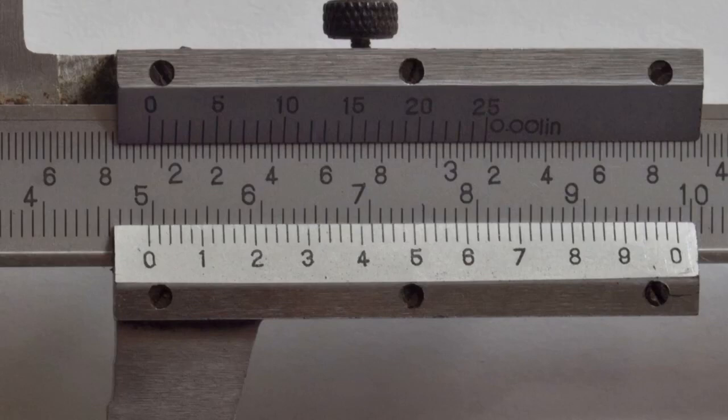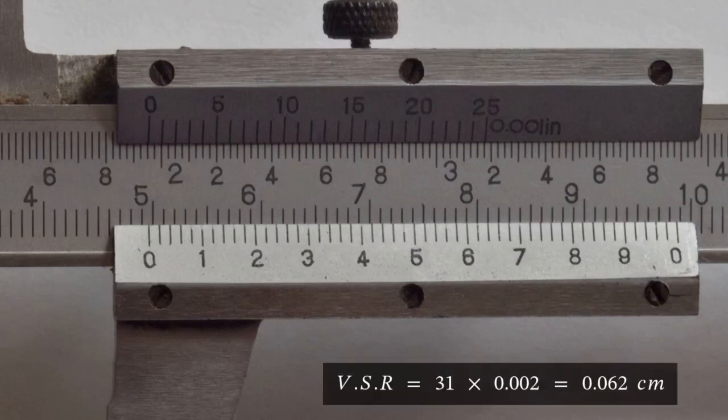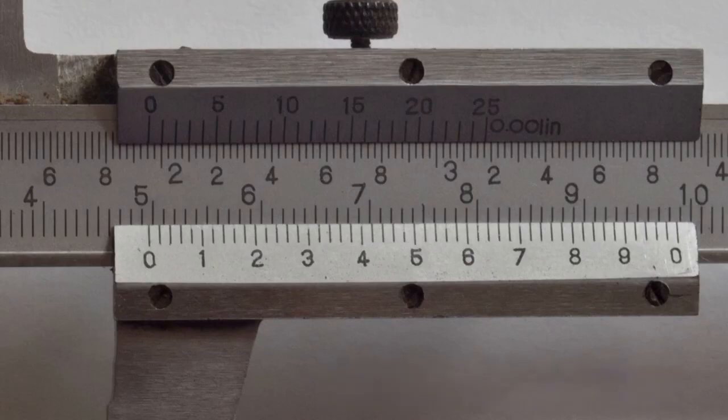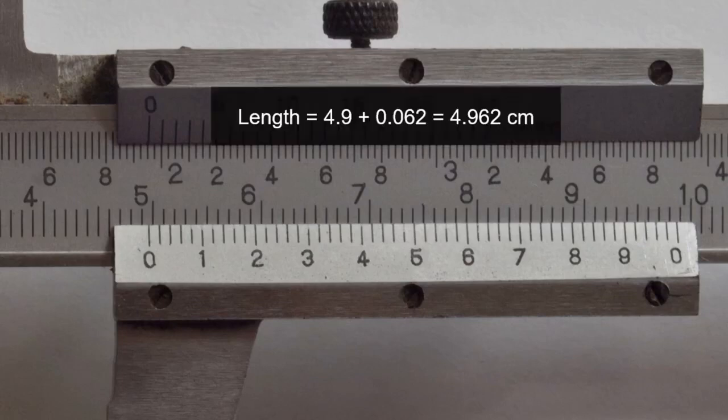For another example, our main scale reading is 4.9 and the vernier scale reading—if you observe, the 31st division exactly matches with the main scale. So, vernier scale reading will be 31 into 0.002, that is equal to 0.062. So, the final reading is 4.9 plus 0.062, which is equal to 4.962 cm.